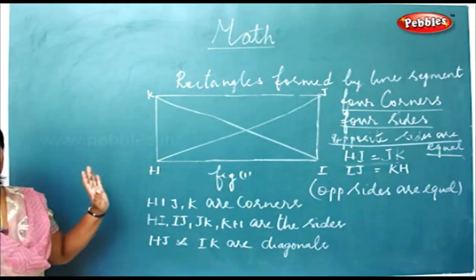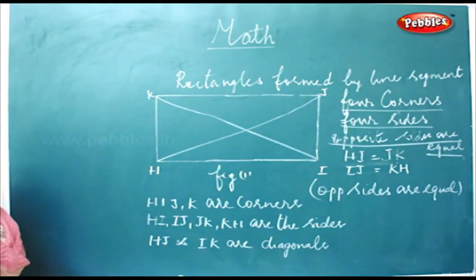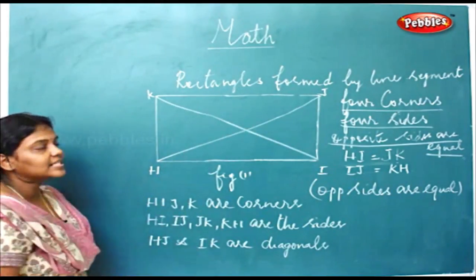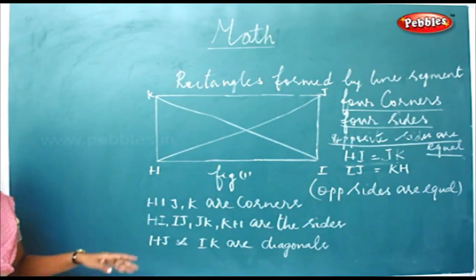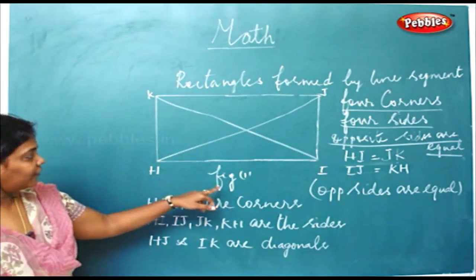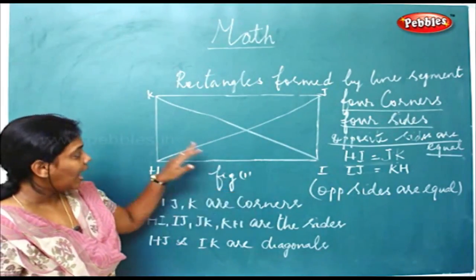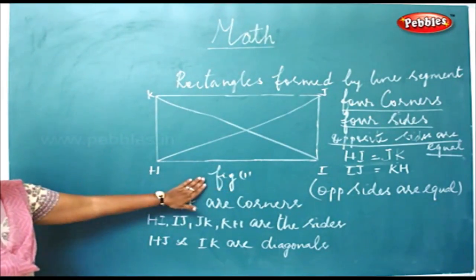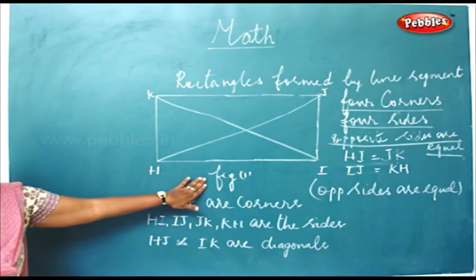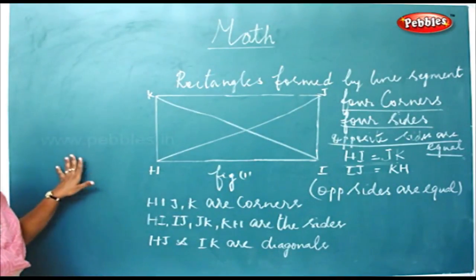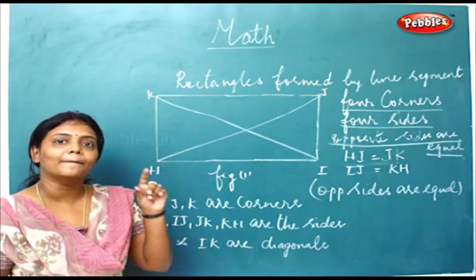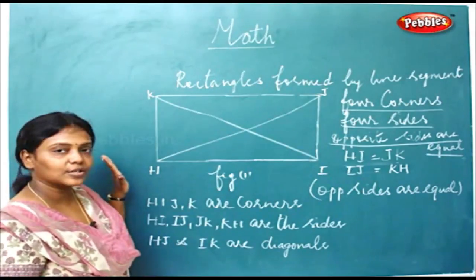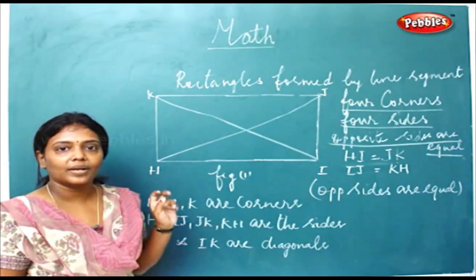For a square, all 4 sides are equal. But for a rectangle, only the opposite sides are equal. Now take out figure number 2 and try doing it as we did figure number 1. You can also try doing this with the help of a matchstick as we did for a square. Ok children?